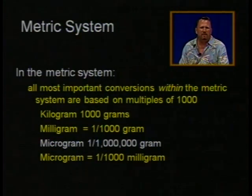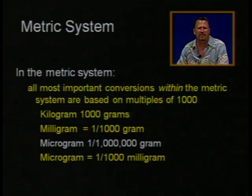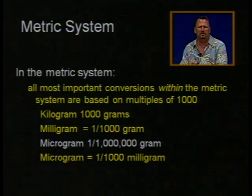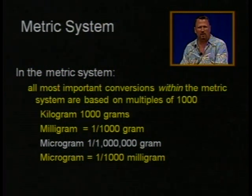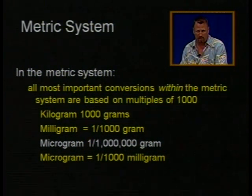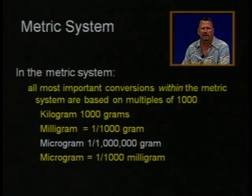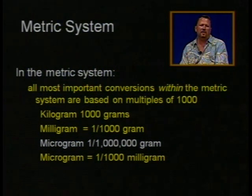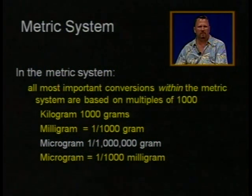All the most important conversions within the metric system are based on multiples of one thousand. A kilogram is a thousand grams. A milligram is one one-thousandth of a gram. A microgram is one one-millionth of a gram — but more importantly, a microgram is one one-thousandth of a milligram. The centimeter — one one-hundredth of a meter — is really the only place we use centi. But everything else important in the metric system is based on multiples of one thousand, and once you understand that, you'll understand where engineering nomenclature comes from.